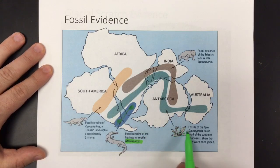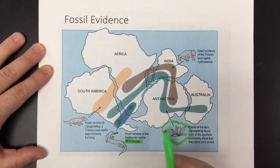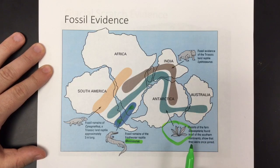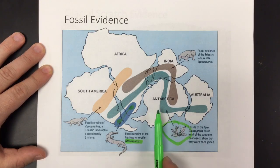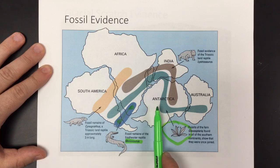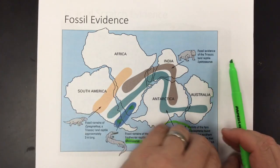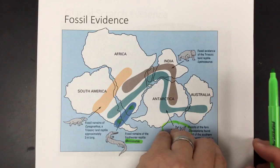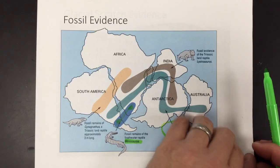The other thing that Wegener noticed was fossils like this plant called Glossopteris. This was a plant that only grows in very warm weather environments, but he found fossils of it in Antarctica. That suggests that Antarctica was probably somewhere else at some point and had moved. So piece of evidence number one is fossil evidence.